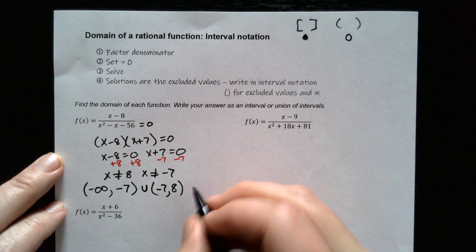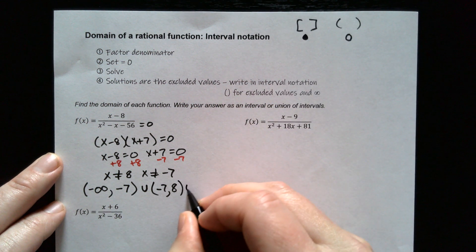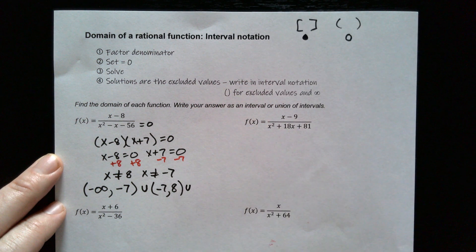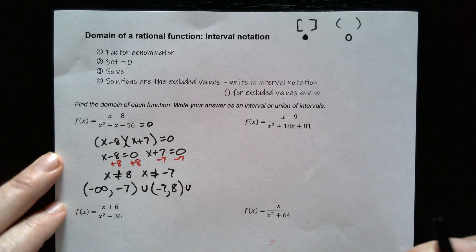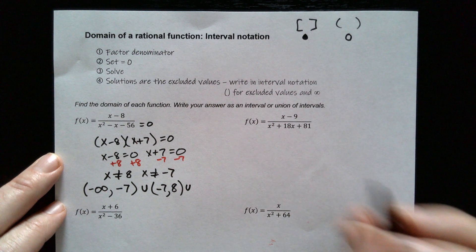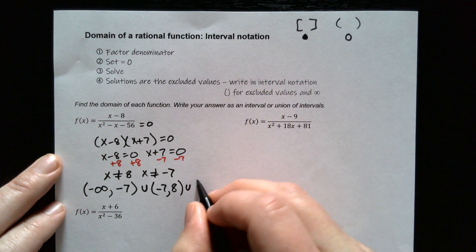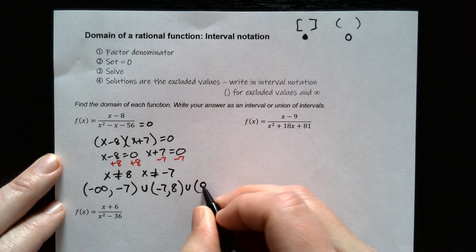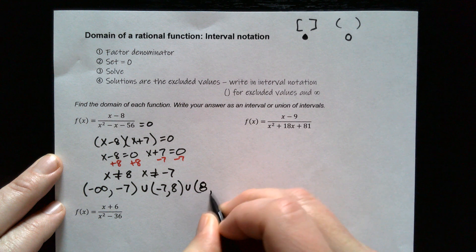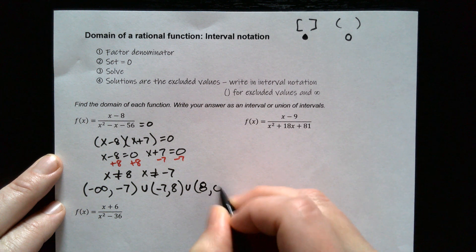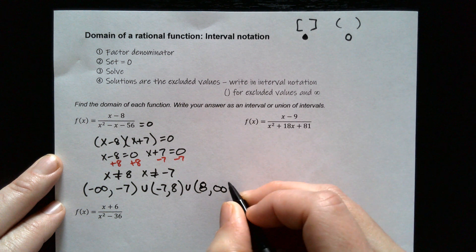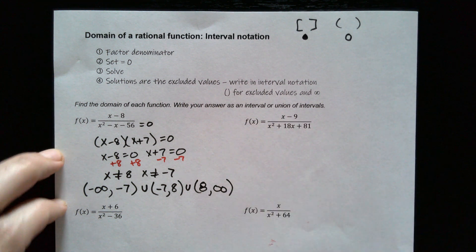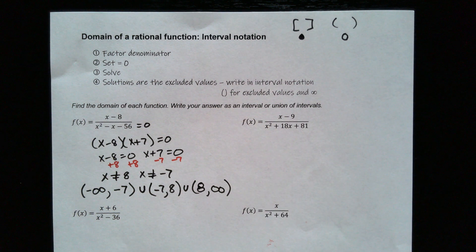Then put a union again, and now all numbers bigger than 8: from 8 to infinity. And there's your interval notation.